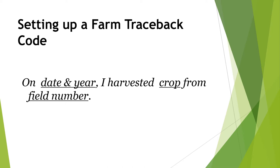Now let's take a look at our traceback code system, or lot number. We used a very simple acronym: on a given date and year, I harvested a crop — which has an assigned number — from field number, which is the number assigned to your production field. So: date and year, I harvested a crop, from field number. If you can remember this and apply it, your lot numbers will be unique to your farm and you'll be able to interpret them without difficulty. This is the basis for our lot number system.